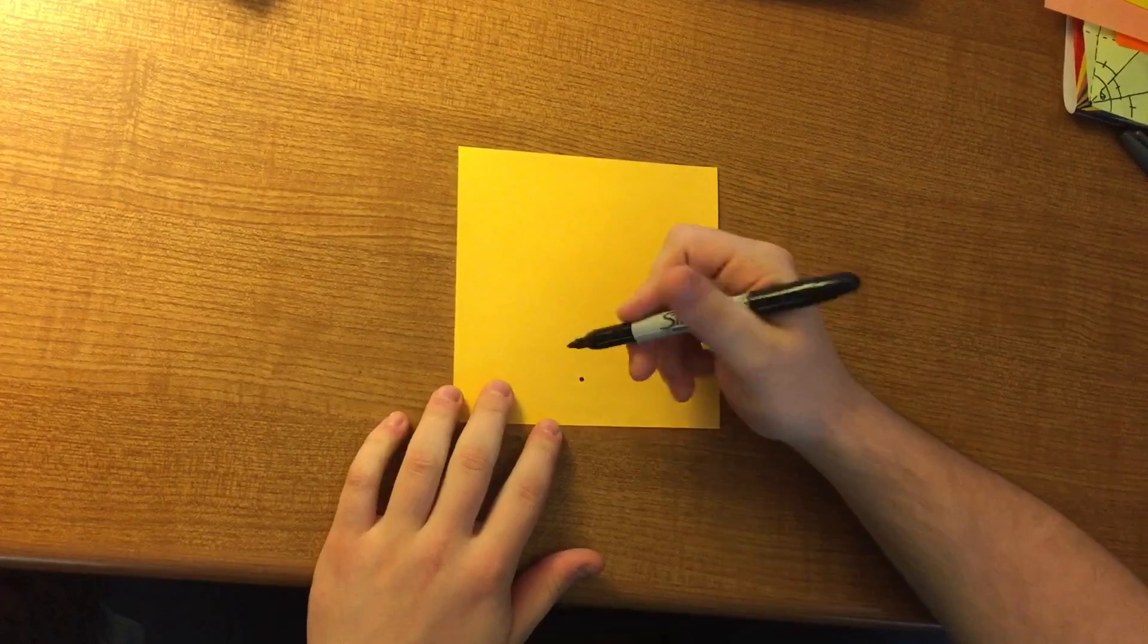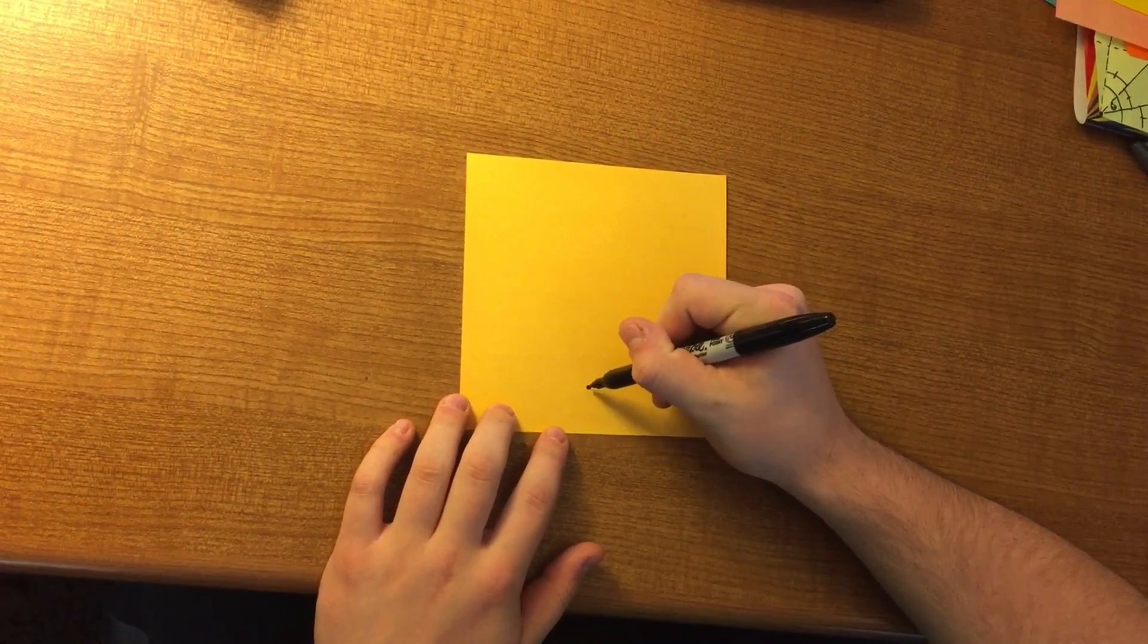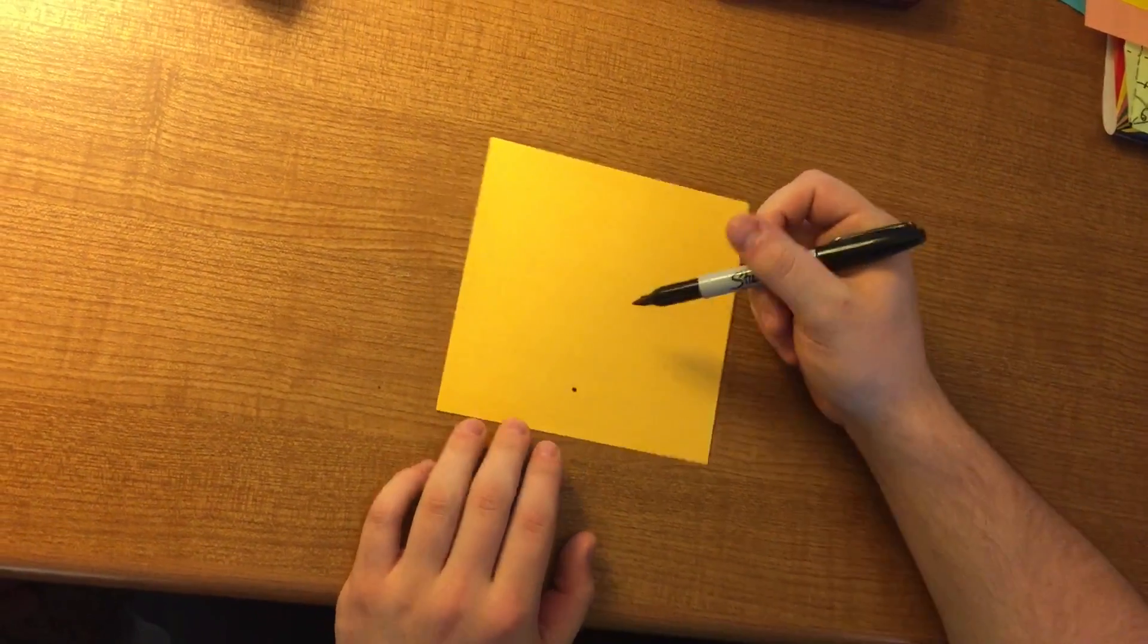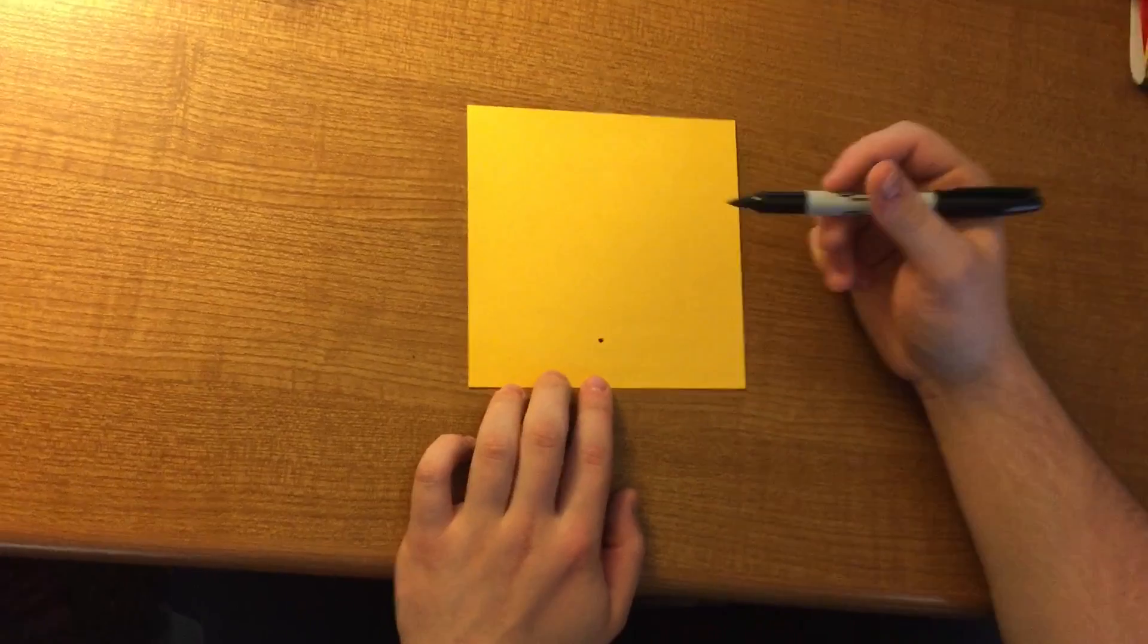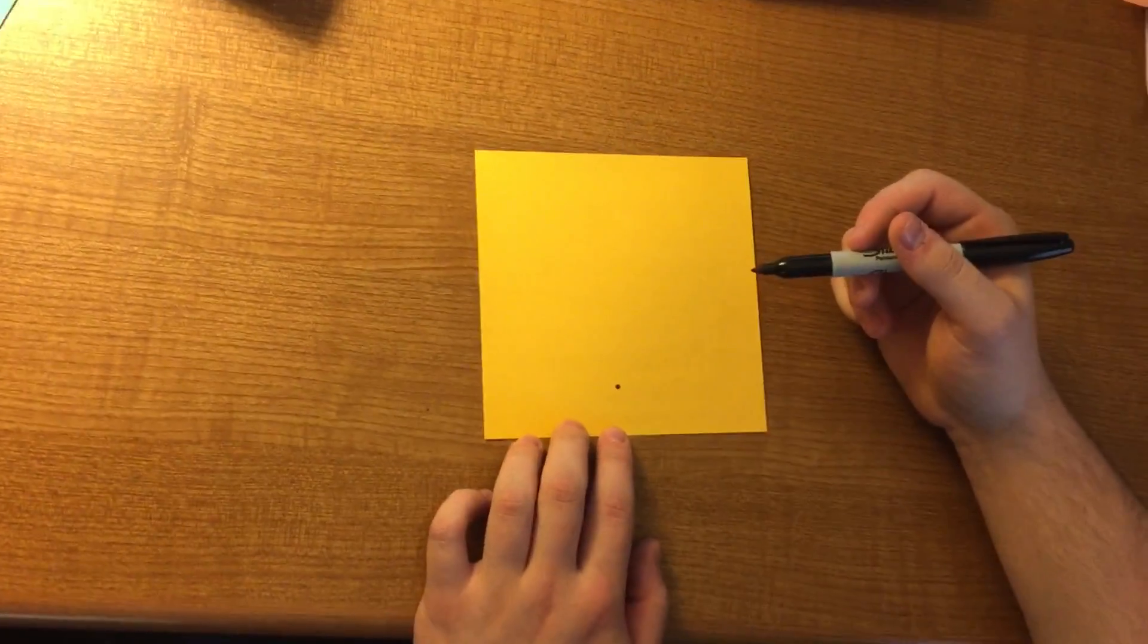So the first thing you want to do is put a dot right here. It doesn't matter exactly where it is. Mine's just a little bit over to the left, just a little bit off center, but that's okay.